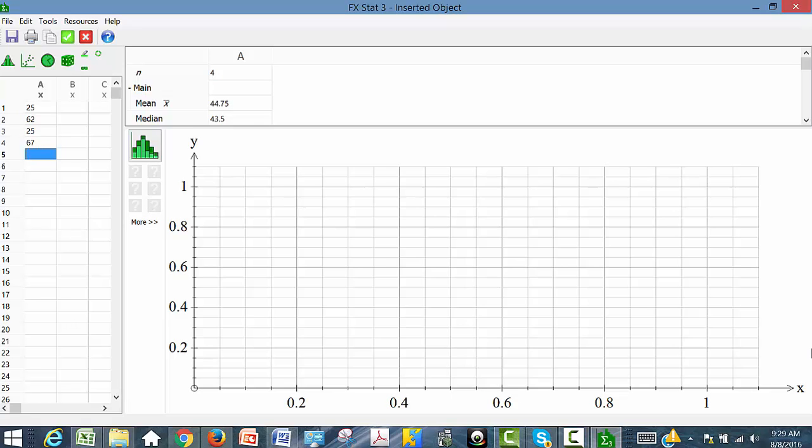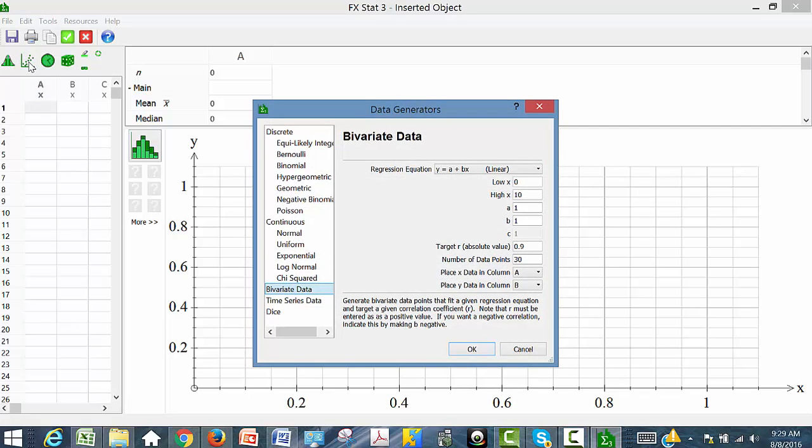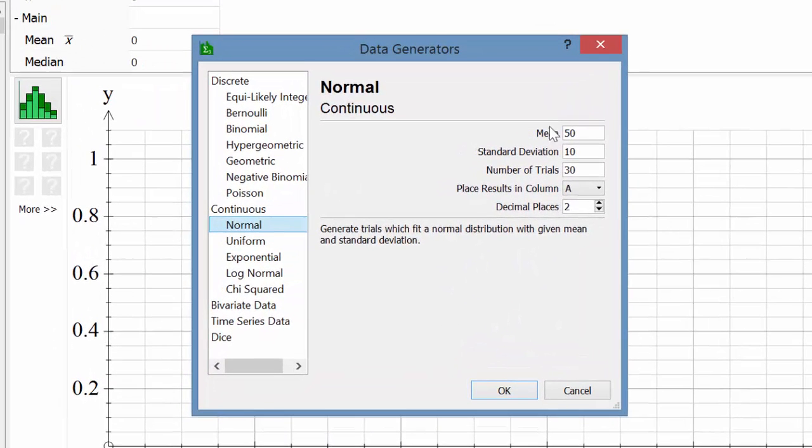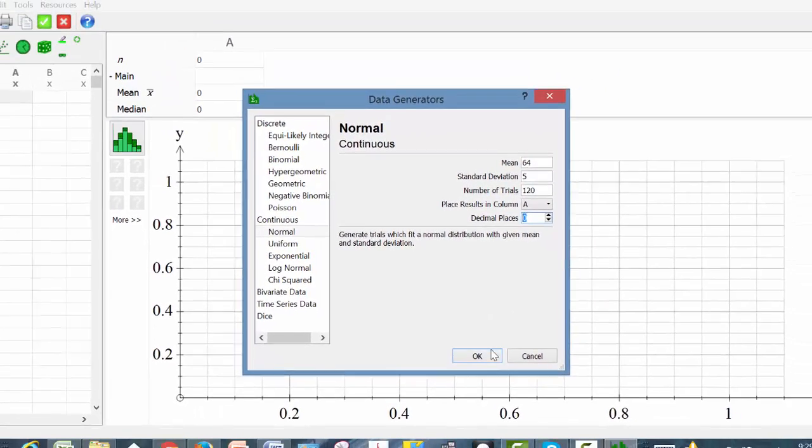But one of the beautiful things about FXStat is that it will generate data for you. So what I wanted was I wanted to generate some data for kids' heights. And, you know, maybe I'd put in a reasonable mean, 64 inches. A reasonable standard deviation, let's say, is 5 inches. We had 120 students. And I think I'm just going to have their heights to the nearest integer. I'm going to put my results in column A because I might want to generate multiple columns of data, maybe with different distributions. I hit OK.